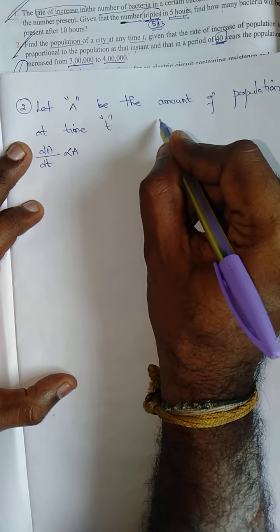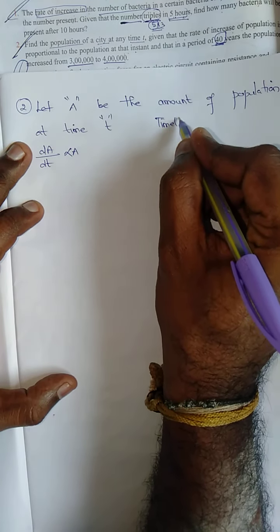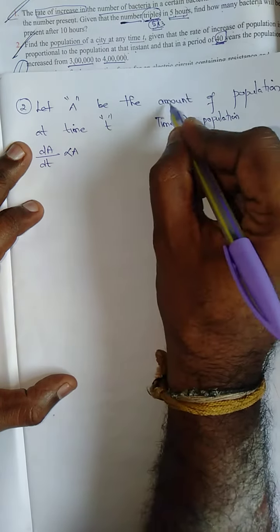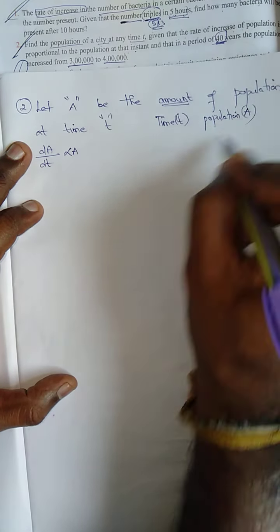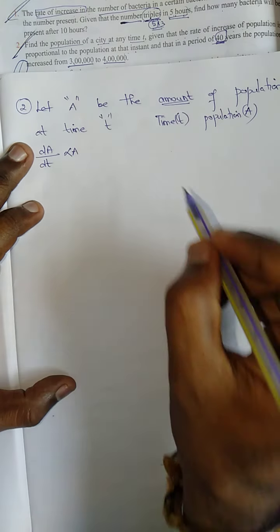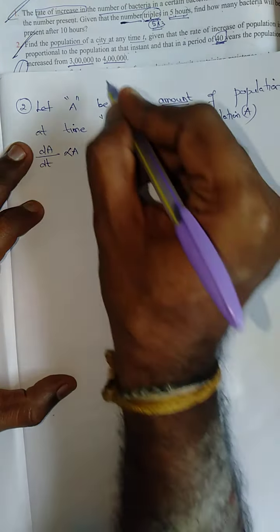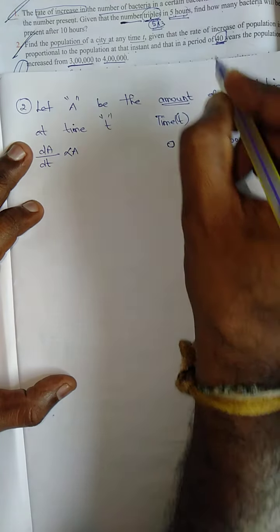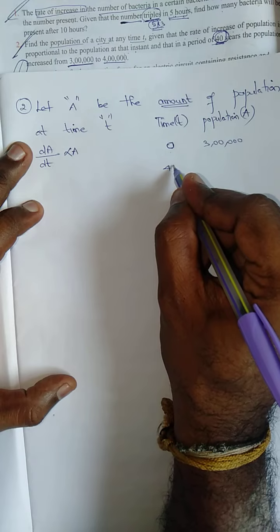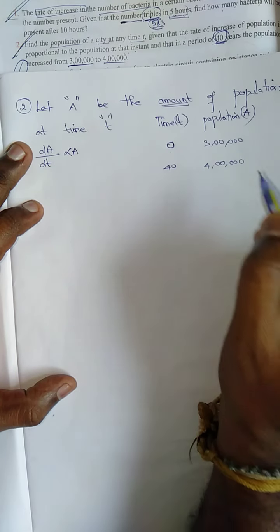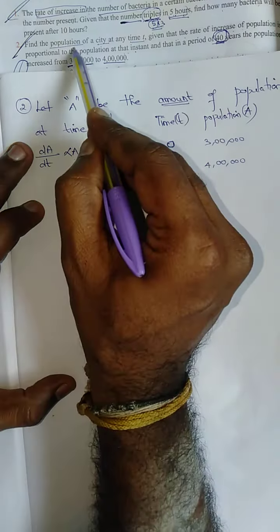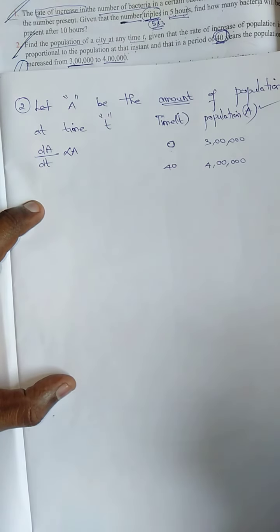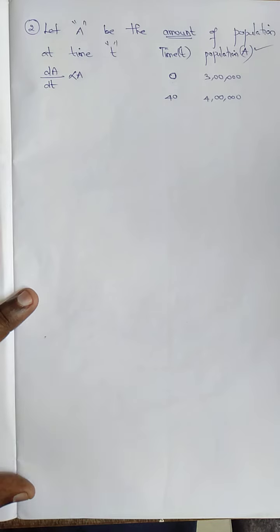I will write a table: time t and population A. Initially, the population is 3 lakh. After 40 years, the population is 4 lakh. That is all they have given. We need to find the population A at time t using this table only.